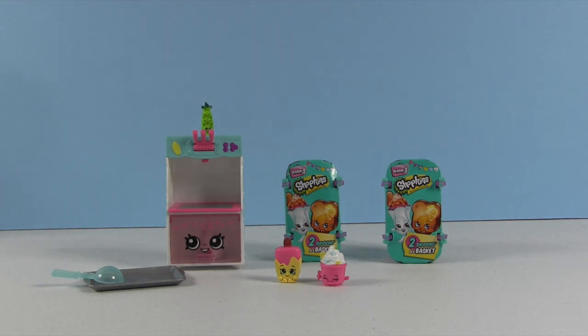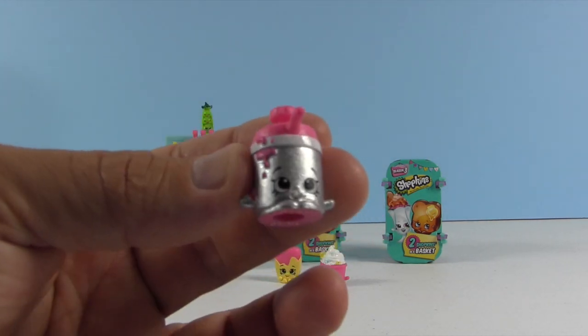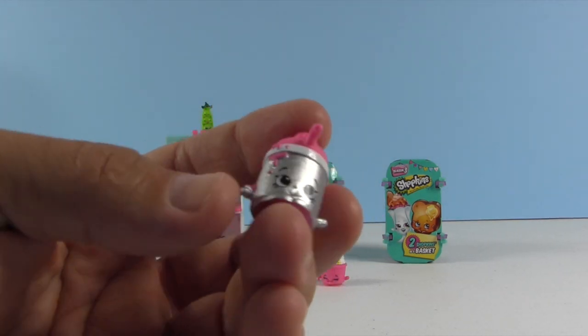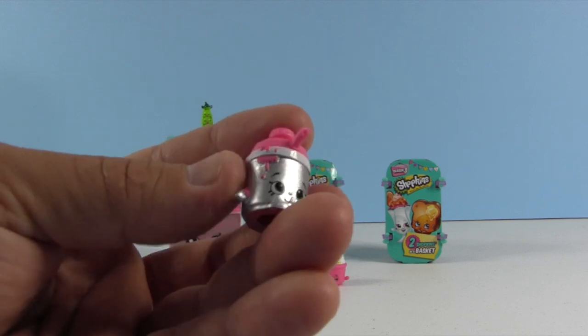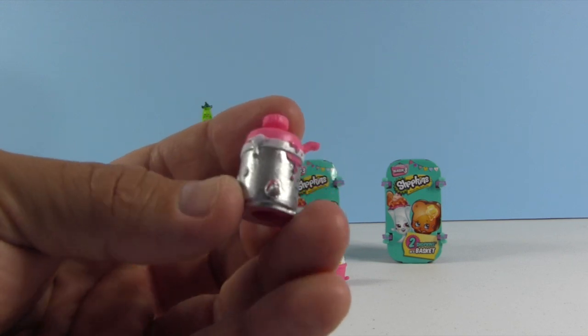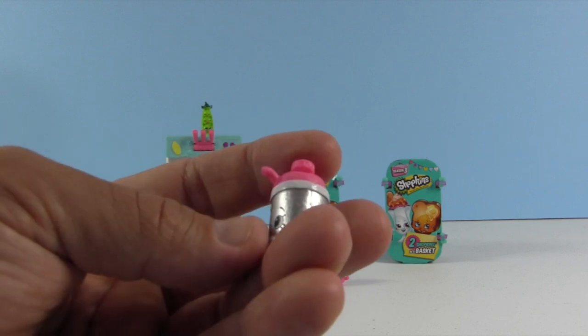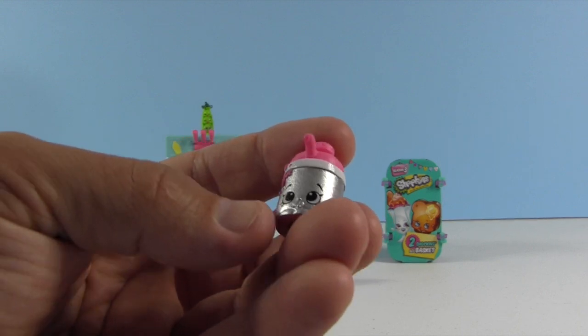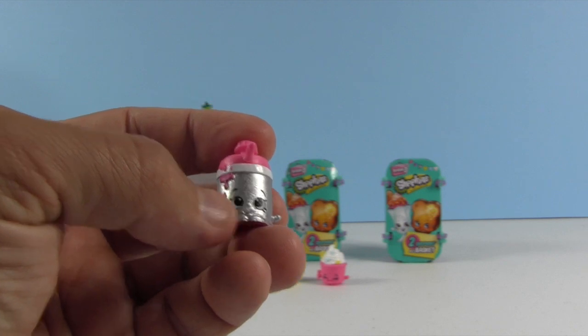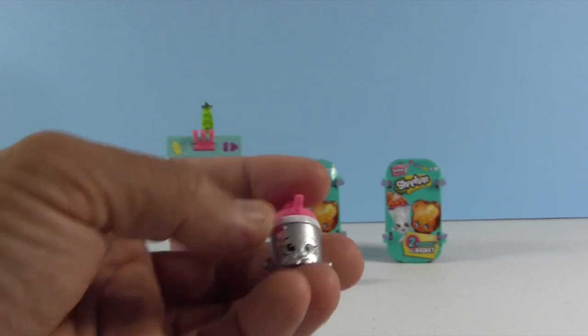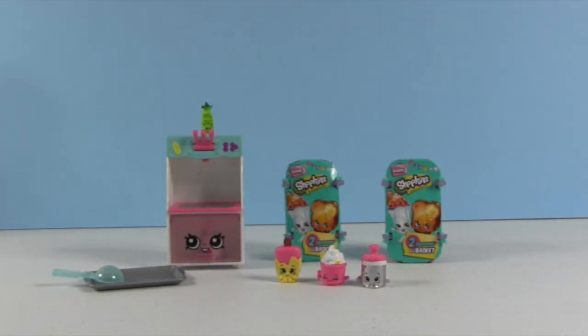Next up, we have Fudgie. Fudgie's awesome. Fudgie is awesome because it's a metallic color Shopkin, and Shannon and I really like those. He's a little bit messy because the fudge dispenser is always messy. That's right, and he's got a little tongue sticking out to lick. Yeah, the hot fudge dispenser is messy, but it's delicious.